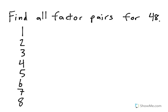Let's start with 1. Every number you can multiply by 1 and get that product. It's always by the same number. So, 1 times 48 is equal to 48, which means that 1 times 48 is a factor pair.